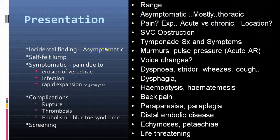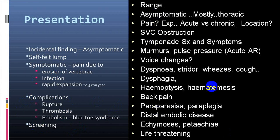The person may be asymptomatic, may feel a pulsatile lump, and pain may be due to erosion of vertebra. There may be infection, distension or expansion of the aneurysmal part. As far as complications are concerned: rupture, thrombosis, and thromboembolism. Depending upon which portion is damaged, symptoms and signs will vary accordingly.